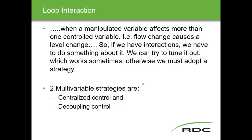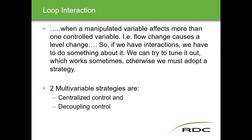An interaction is when a manipulated variable affects more than one controlled variable. In the previous example, a flow change caused a level change as well as a flow change. So if we have interactions we have to do something about it — we can try to tune it out as two individual loops, which works sometimes, but if it doesn't, we have to adopt a strategy to control it.